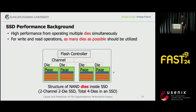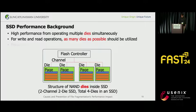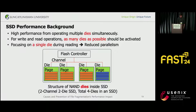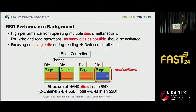Assume that you are writing a file larger than four pages. The ideal placement is one page per each die, as shown in the figure. This guarantees maximum performance when you read this file. Now, suppose that for some reason these pages were allocated in a single die. When you try to read this file, the four-page read operation must be performed one by one — four times slower than the ideal case. This delay caused by processing read requests coming to the same die is known as read collisions. This is the source of the problem.